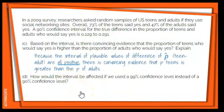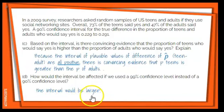Part D: how would the interval be affected if we used a 99% confidence level instead of 90%? We're making our target bigger — we want to be 99% confident instead of 90%. If our target's getting bigger, the margin of error has to get wider, which makes the interval larger.